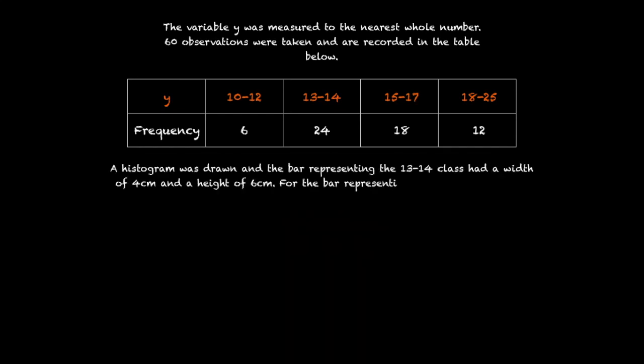A histogram was drawn and the bar representing the 13 to 14 class has a width of 4cm and a height of 6cm. For the bar representing the 15 to 17 class, find the width and the height.